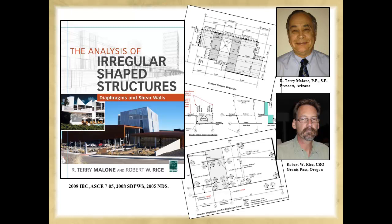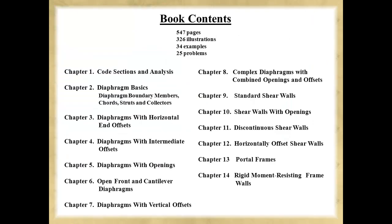This practice can lead to structural failures. The book covers all the components of an irregular-shaped structure such as relevant code and standard sections, diaphragm basics, diaphragms with horizontal and vertical offsets, diaphragms with openings, open front and cantilever diaphragms, diaphragms with multiple irregularities, standard shear walls, shear walls with openings, discontinuous shear walls, in-plane and out-of-plane horizontally offset shear walls, portal frames, and a special presentation on rigid moment-resisting frame walls.